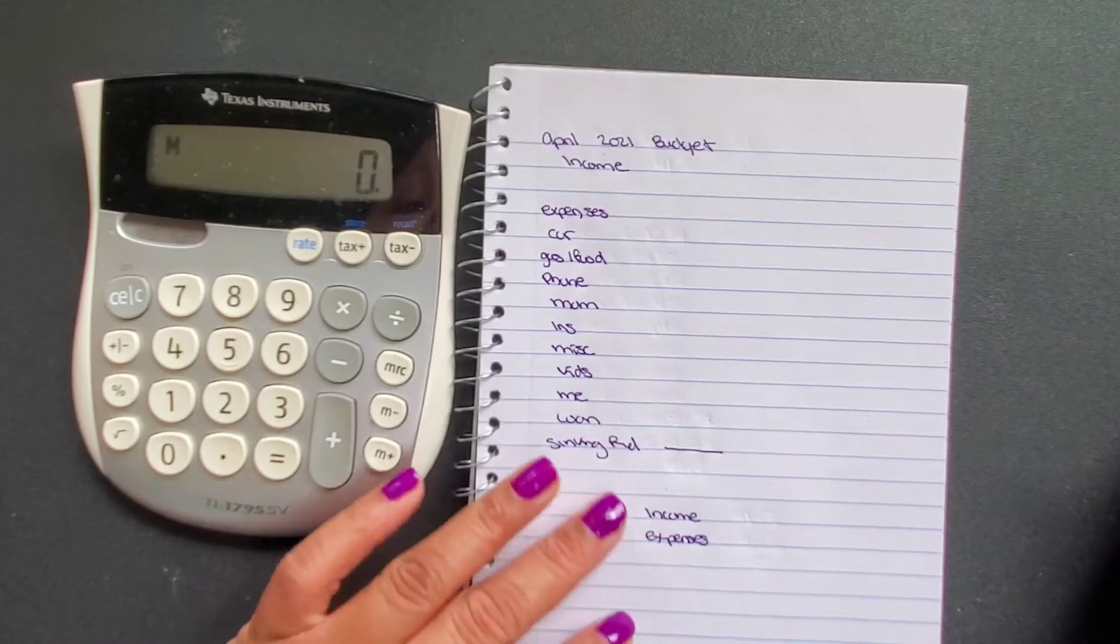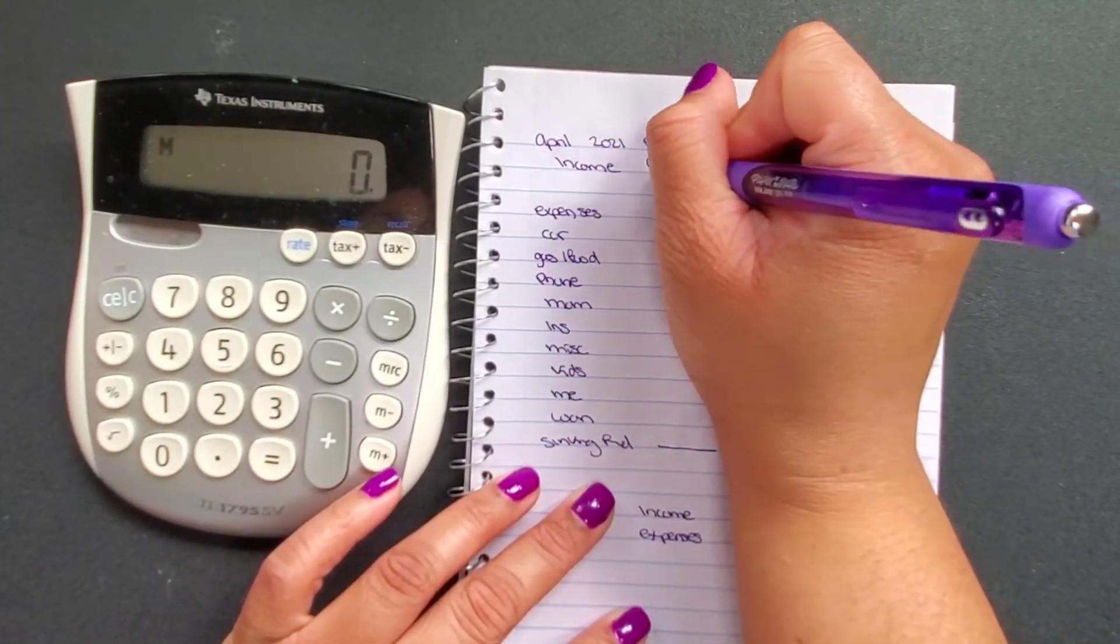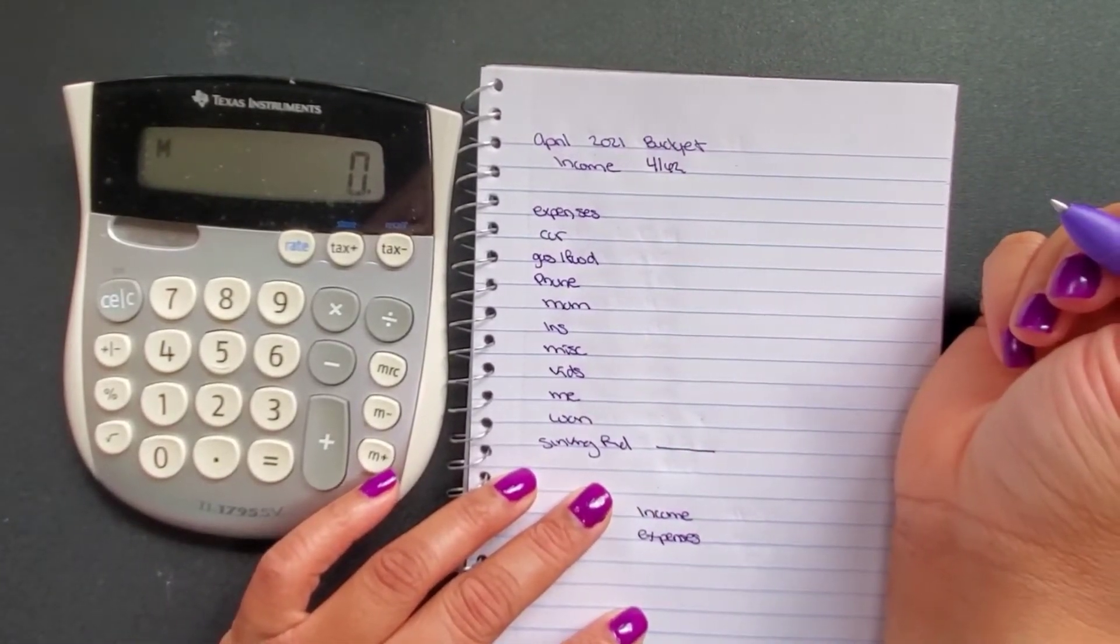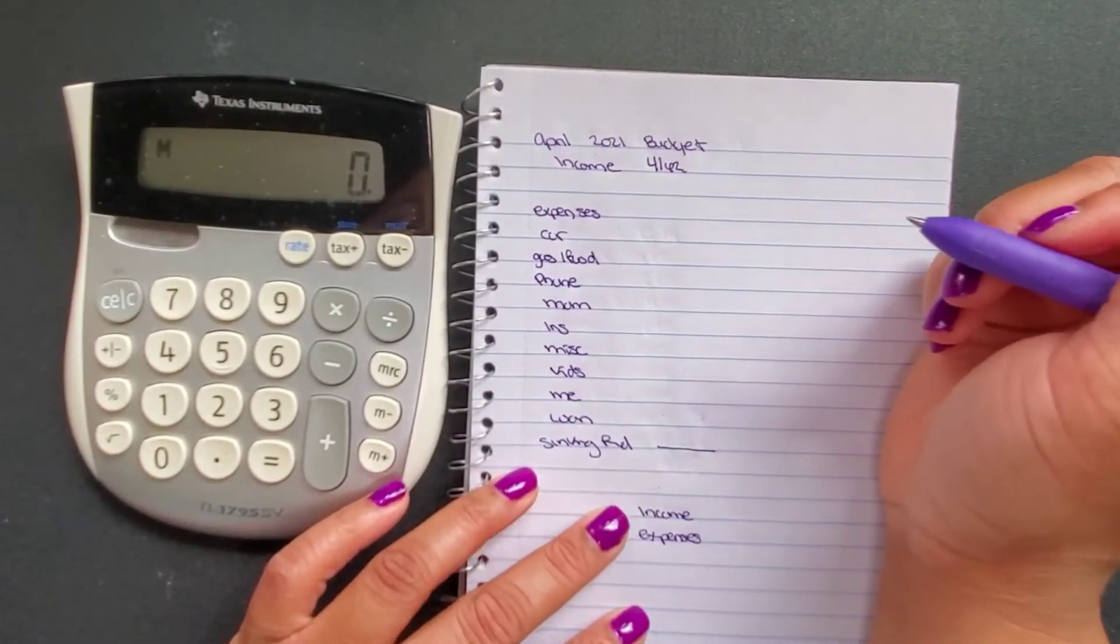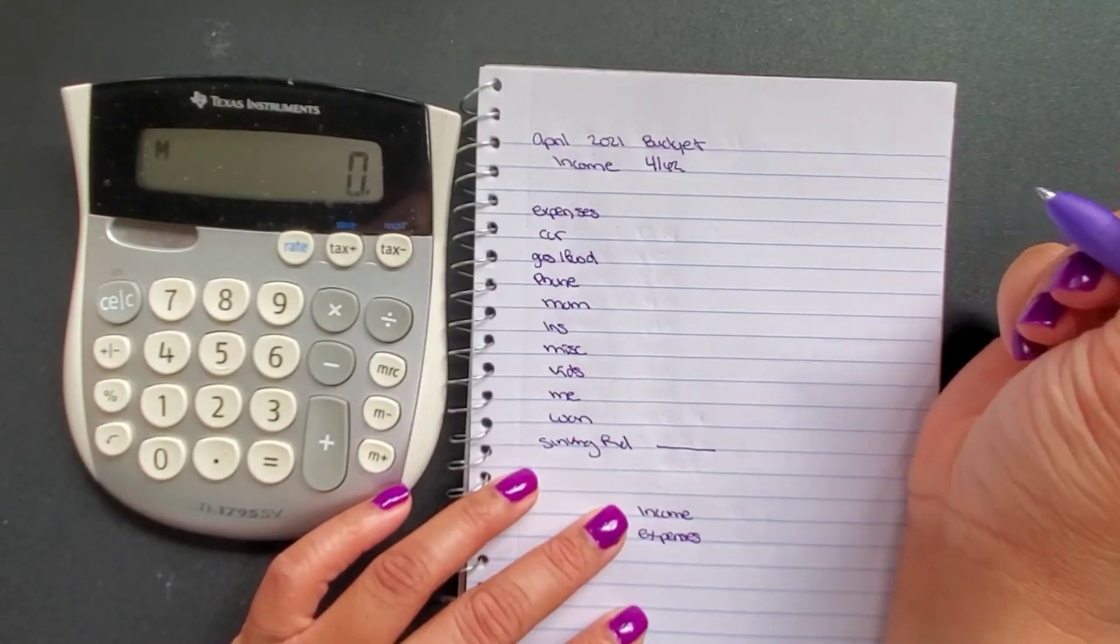Today for my projected income, I am anticipating $4,162 and I am a zero based budgeter. So if I did all of this math ahead of time correctly, it is going to equal zero out from my expenses.